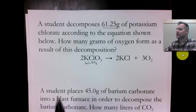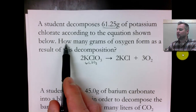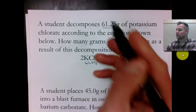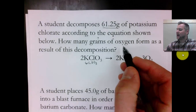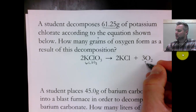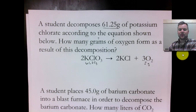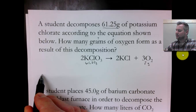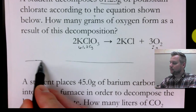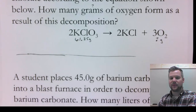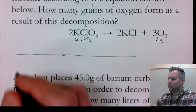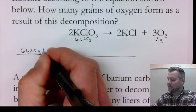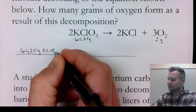Then it says how many — so right here is my question word — and it says grams attached to my question word. So I'm going to question mark that, and it says oxygen, so I'm going to write down question mark grams underneath the balanced chemical equation. When I'm setting up these factor label grids, you're going to need plenty of space to do this. Because we always start with what we know, the 61.25 grams of potassium chlorate go in the top left box.